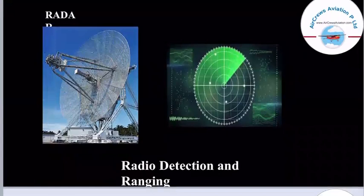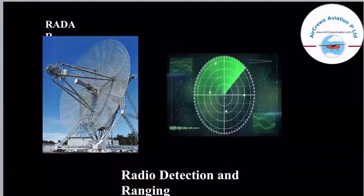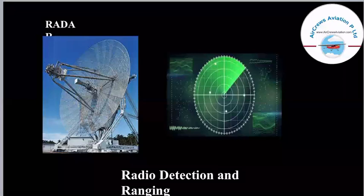First, coming to radar. The full form of radar is Radio Detecting and Ranging. In this picture you can see how a radar basically looks. The first picture shows the structure of a radar, and the second picture shows the monitor screen of the radar. On the monitor screen, we can see a green panel with white dots over it. These white dots represent aircraft, showing the position of the aircraft on the monitor screen.